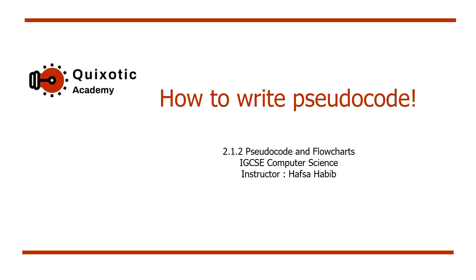Pseudocode is literally 'false code.' Pseudocode makes your algorithm a little more like actual code so you can convert it to real code more easily. Let's have an example and look at how pseudocode helps us.